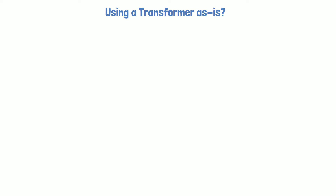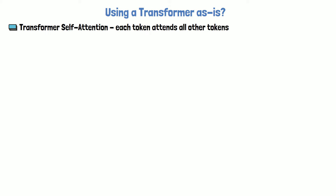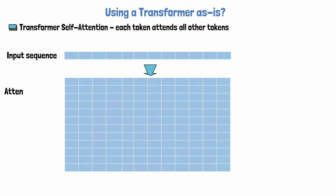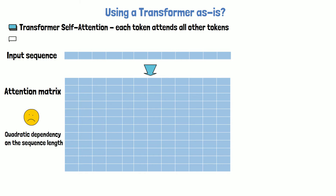Before diving into how vision transformers work, let's first ask: why can't we simply feed a transformer with image pixels? At the core of the transformer model we have self-attention, where each token attends to every other token in the input sequence. For an input sequence of 12 tokens, for example, we would get a 12x12 matrix called the attention matrix. This matrix has a quadratic dependency on the sequence length, which makes it difficult to scale up the context length.